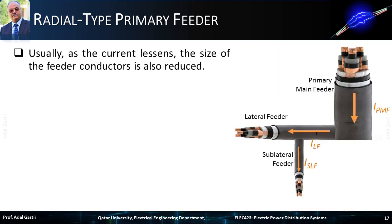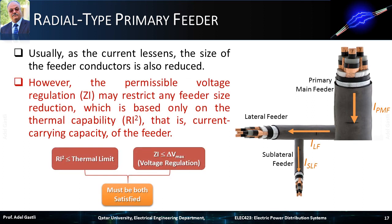Usually, as the current lessens, the size of the feeder conductors is also reduced. However, the permissible voltage regulation — that is, conductor impedance times current — may restrict any feeder size reduction which is based only on the thermal capability (RI²), that is, the current carrying capacity of the feeder. So both cable thermal limit and voltage regulation must be satisfied when sizing and selecting the proper feeder cables.